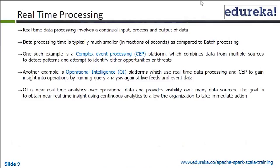In real-time processing, the data processing is typically much smaller — usually in fractions of seconds — as compared to batch processing where the batch window at fastest would be several minutes. The typical use case of near real-time systems would be CEP — complex event processing platforms.